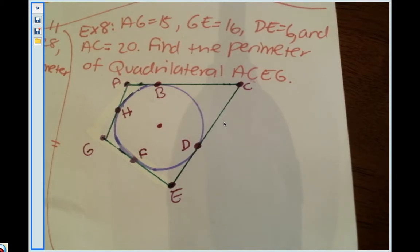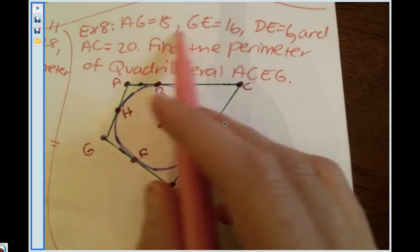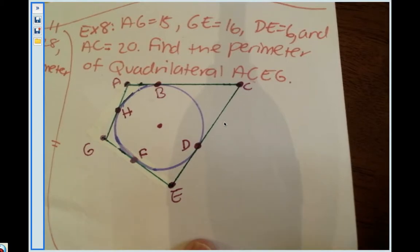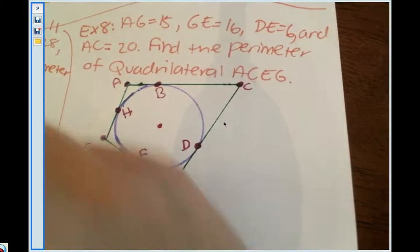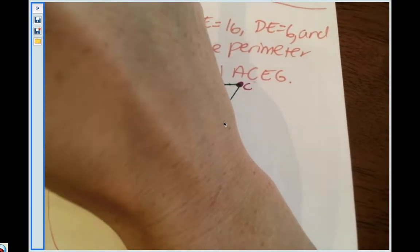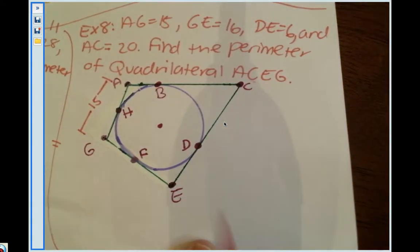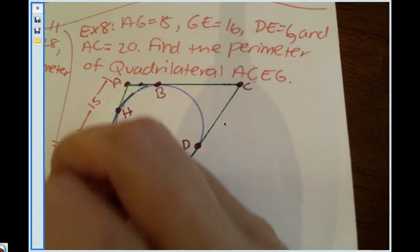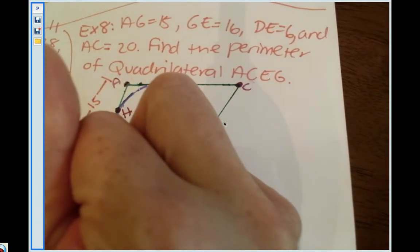I'm going to start by labeling my picture. AG is 15, so A to the G, which is right here, is 15. This whole thing is 15. G to the E is 16, so this whole thing is 16.